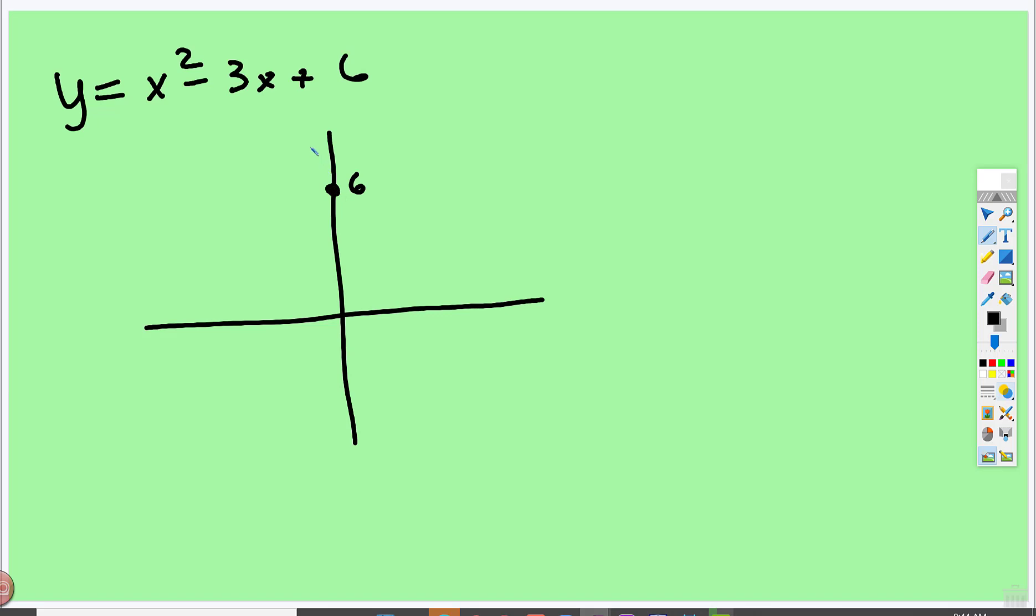it would touch up there at 6, so maybe you write it like that. Some of you might write it like that. It would still have the general shape of an upward facing parabola touching on the y-axis at positive 6.